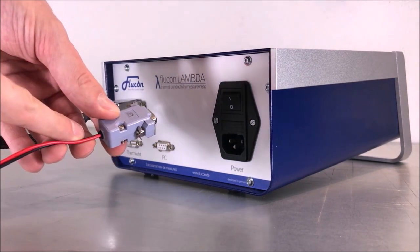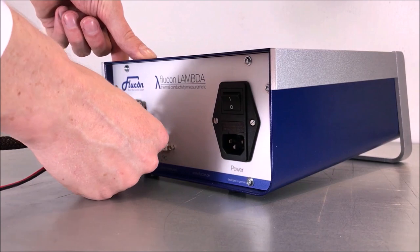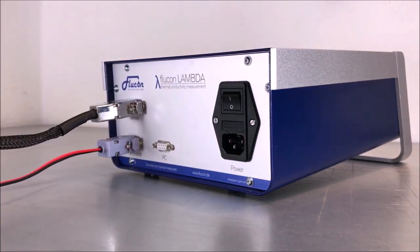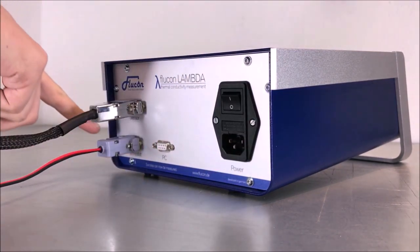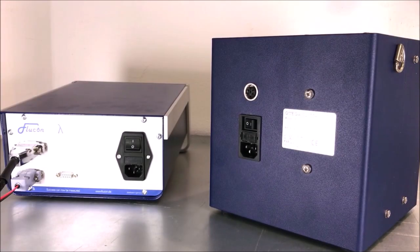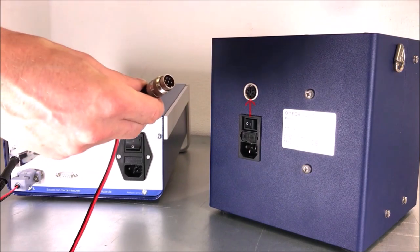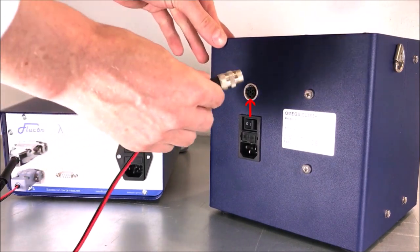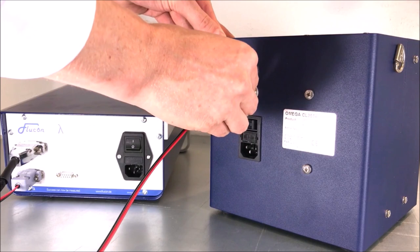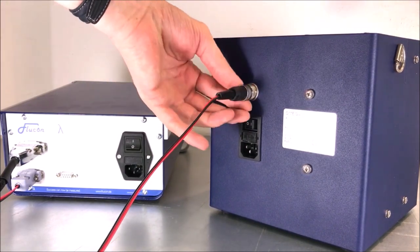After this, connect the sub-D ending of the thermostat cable to the thermostat socket. Again, use the screws on both sides to fix the connection. The other ending of this cable should be plugged into the thermostat with the tiny metal pin facing downwards. Use the cap screw to tighten this connection as well.